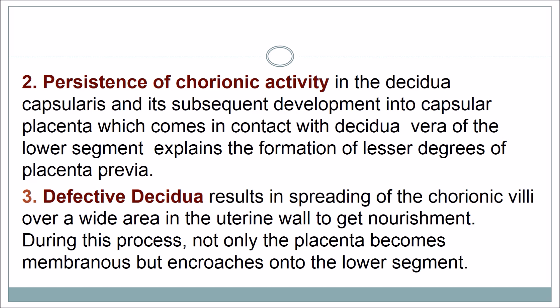The capsular placenta comes in contact with the decidua vera of the lower uterine segment, explaining the formation of lesser degrees of placenta previa. Third, defective decidua results in the spreading of chorionic villi over a wide area in the uterine wall to obtain nourishment, during which the placenta not only becomes membranous but also encroaches onto the lower segment.